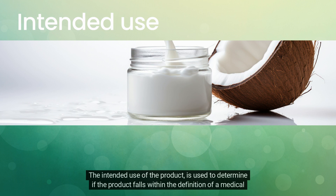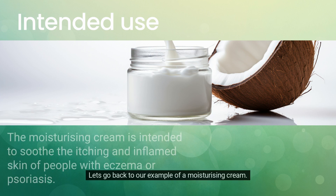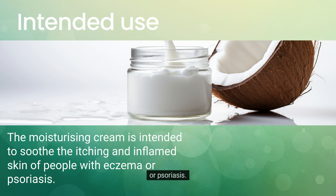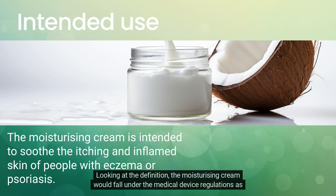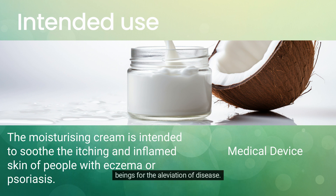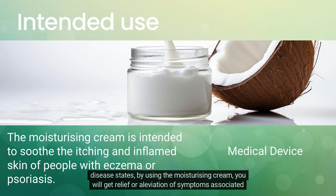The intended use of the product is used to determine if the product falls within the definition of a medical device described in the regulation. For example, if a moisturizing cream is intended to soothe the itching and inflamed skin of people with eczema or psoriasis, it would fall under the medical device regulations. This is because the cream is a material intended to be used alone on human beings for the alleviation of disease, as eczema and psoriasis are disease states.